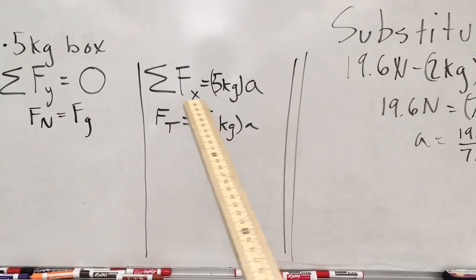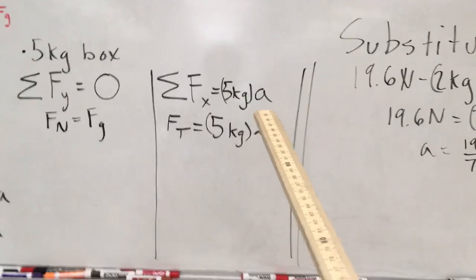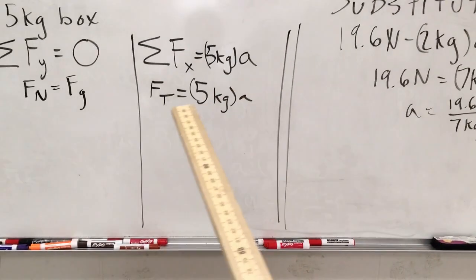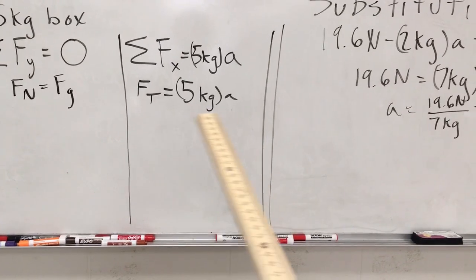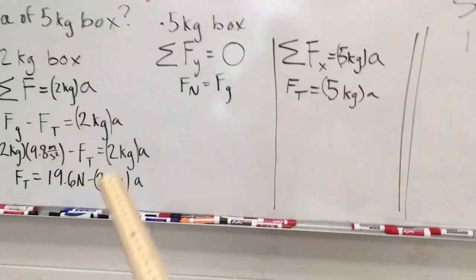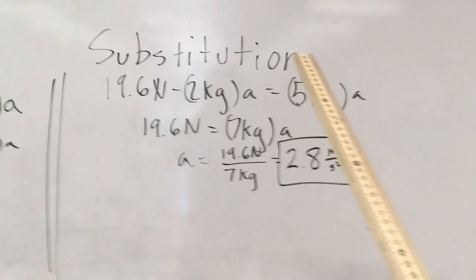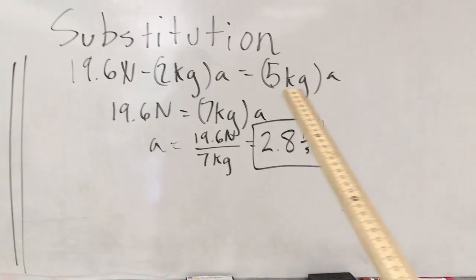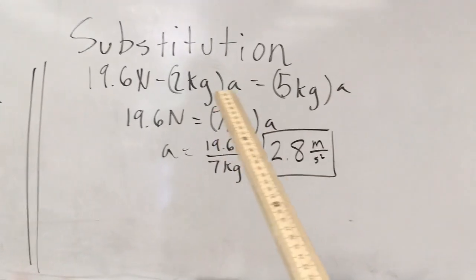In the x direction, we write the net force equation: the sum of forces equals mass times acceleration. The only force in the x direction is tension, so the force of tension equals five kilograms times acceleration. Now we have two equations with two variables, so we can combine them using the substitution method. On the left side is the expression from analyzing the two kilogram block; on the right side is the expression from analyzing the five kilogram block in the x direction.